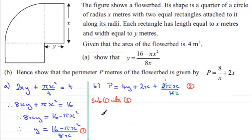So if we do that, we therefore have that the perimeter P equals 4 multiplied by y, so just mark that in as (16 - πx²)/(8x), and then to this we add the 2x, and to this again we add πx/2.